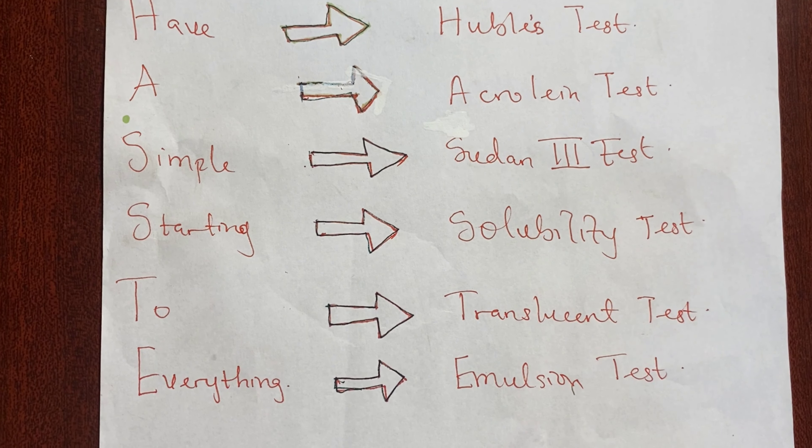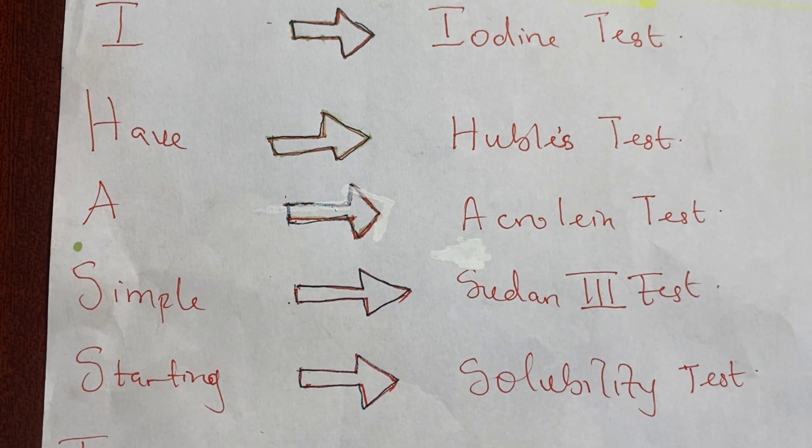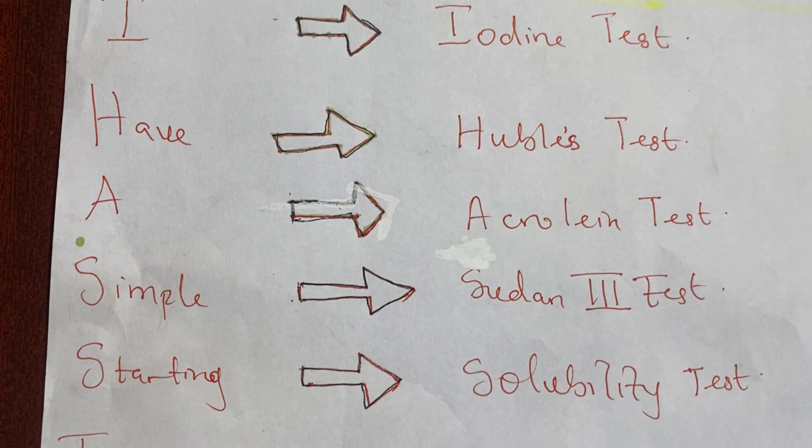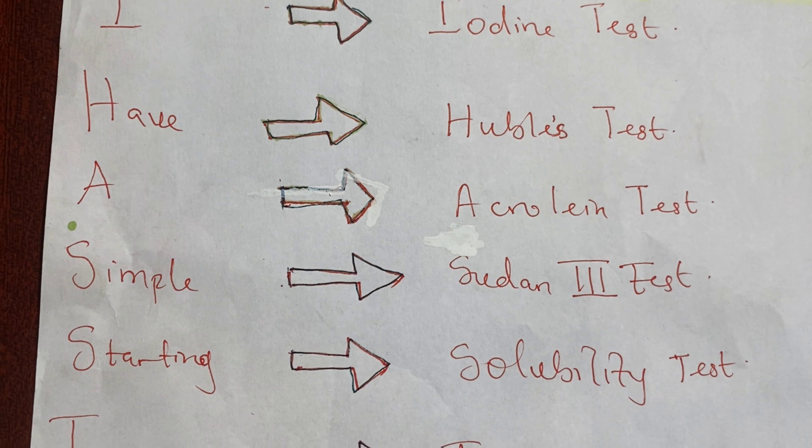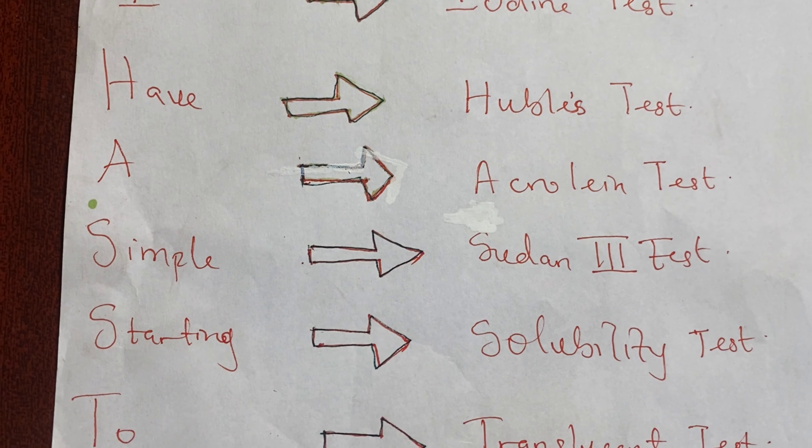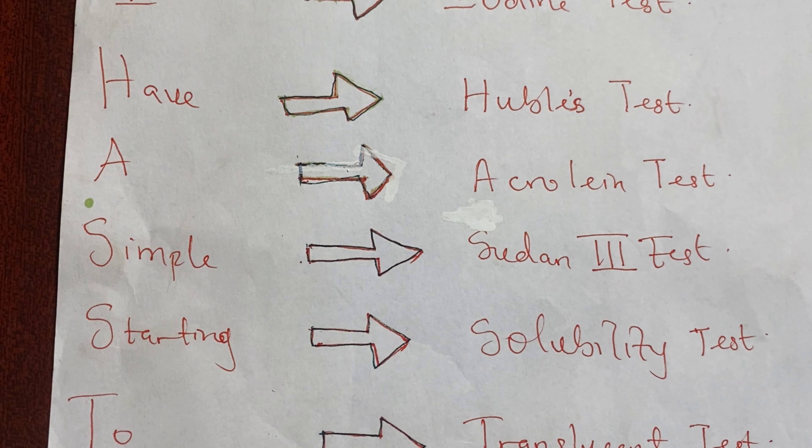I have a simple structure to everything. You have I for iodine, H for Hubl's test, A for Acrolein test, S for Sudan III test — which is my favorite — then tests for solubility, transition, and emulsion tests.